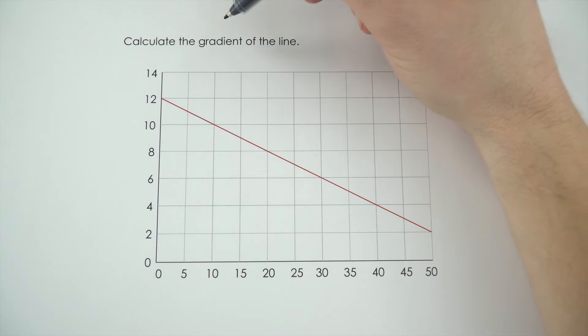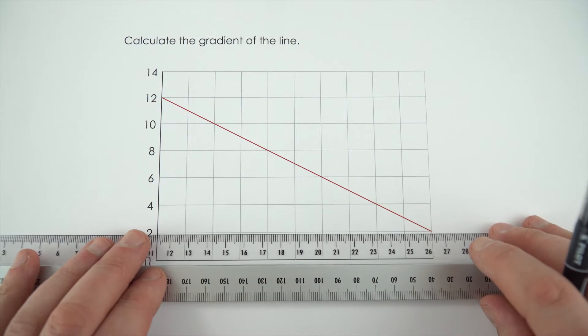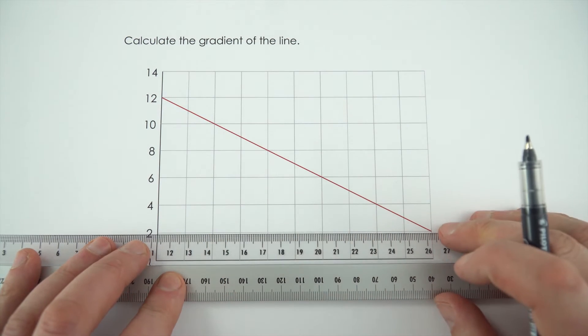In this example I'm once again going to need to calculate the gradient of the line. I'm going to start by just drawing onto my graph here the largest triangle possible that meets up with the line.